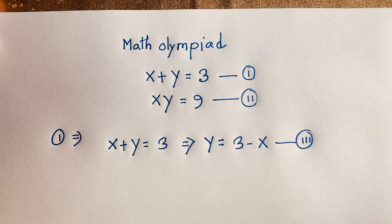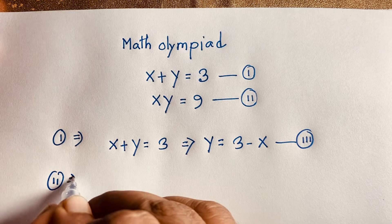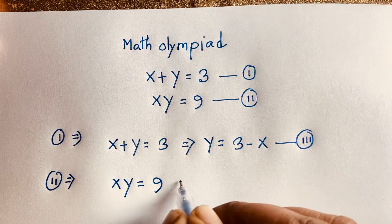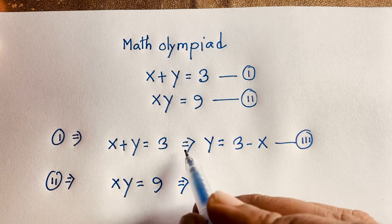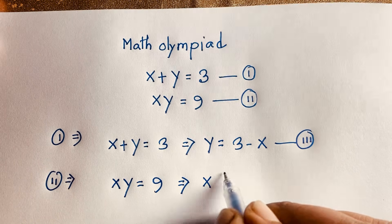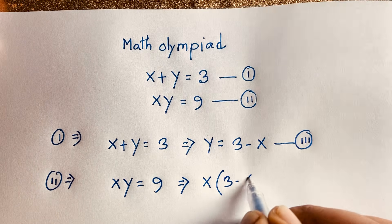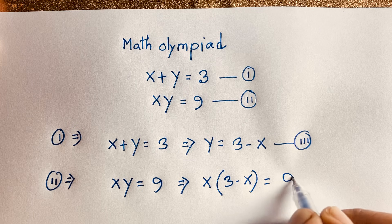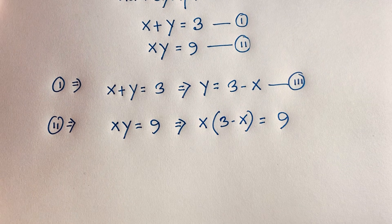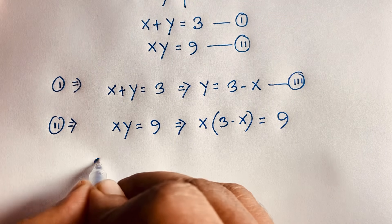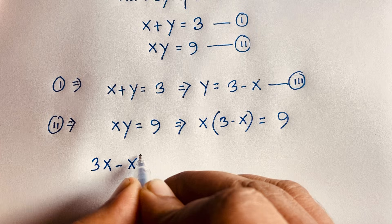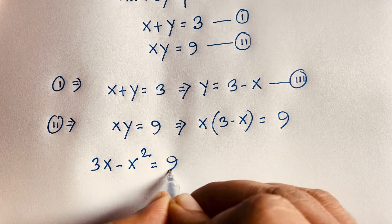Now, our second equation is x times y is equal to 9. Since y is equal to 3 minus x, I substitute this value into the expression. So, x times (3 minus x) is equal to 9. Expanding: x times 3 gives 3x, minus x times x gives x squared, so 3x minus x squared is equal to 9.